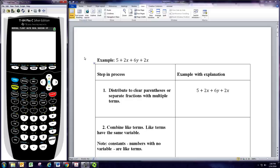In the first step we'll distribute to clear any parentheses, or if you have fractions that have multiple terms in the numerator. After that's done, then we can combine like terms, terms that have the same variable.